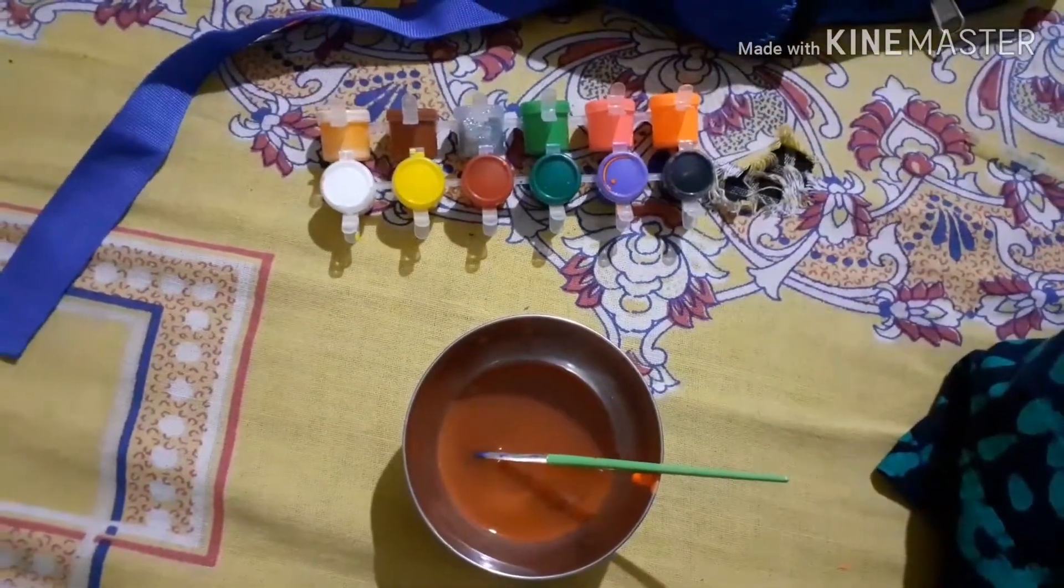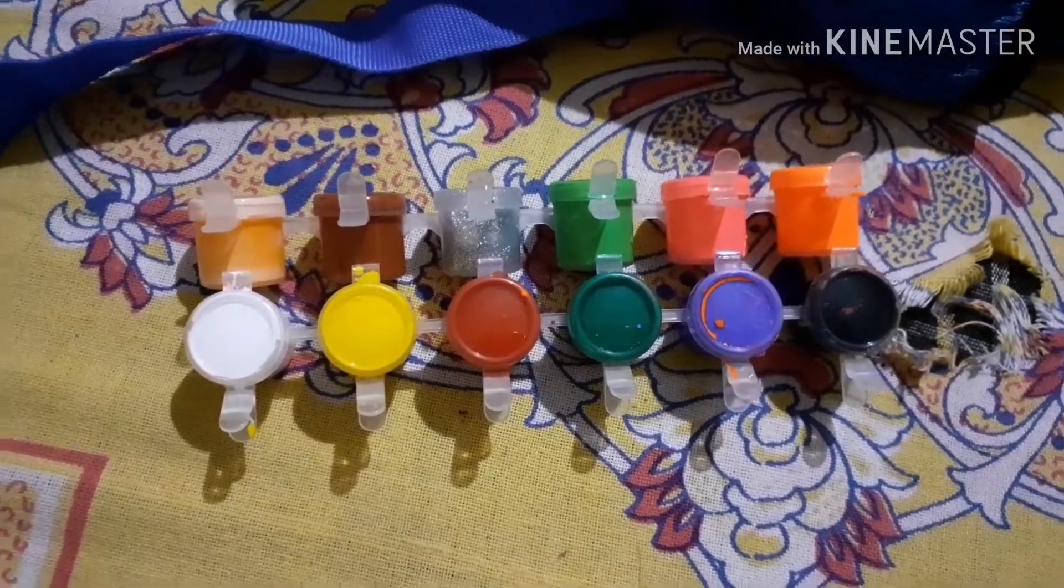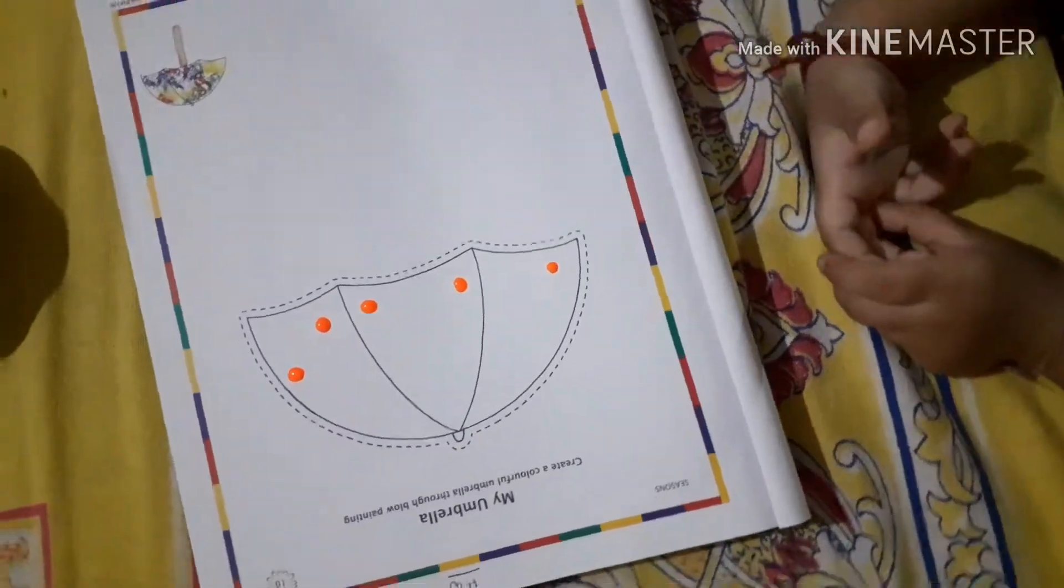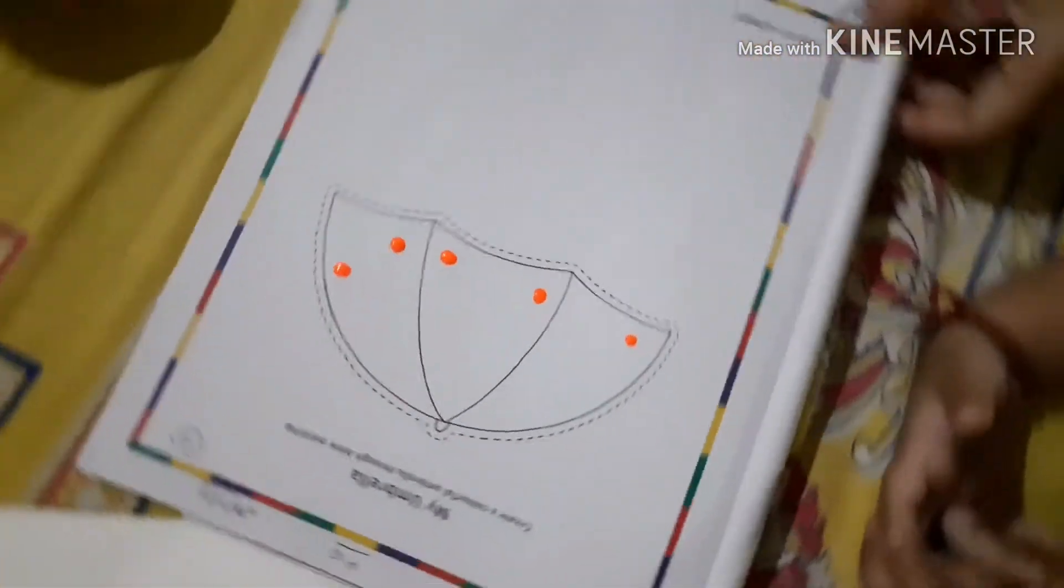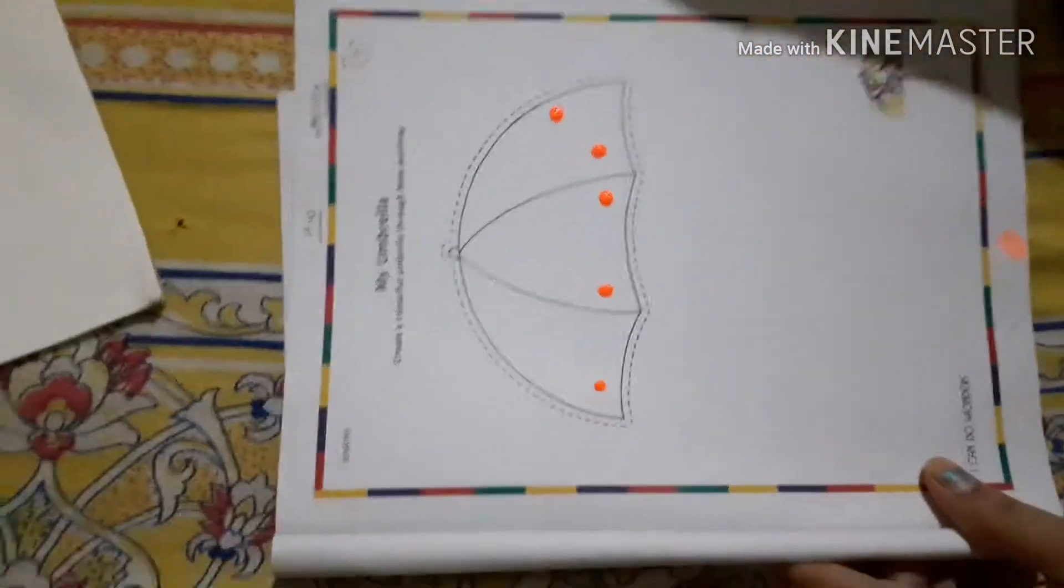So for that you need water colors, a brush, and a little bit of water. After that, see this is the sheet on which an umbrella is already made.